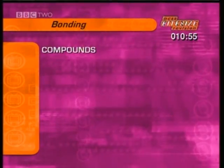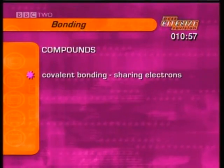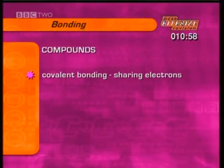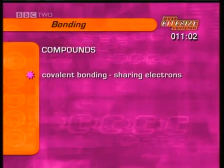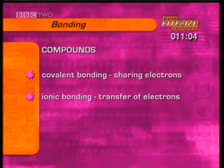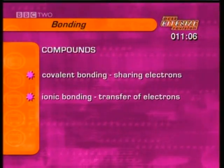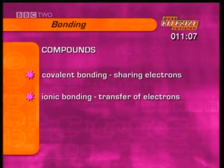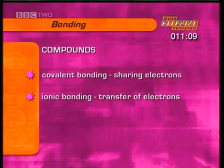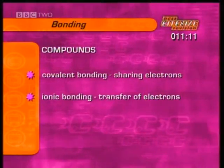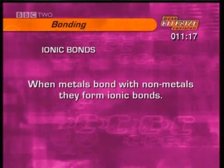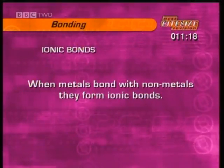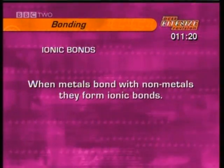We saw two types of chemical bonding there. Covalent bonding is when atoms share some of the same electrons in their outer shells. Ionic bonding is when electrons transfer from the outer shell of one atom to the outer shell of another. First, more about ionic bonding. When metals bond with non-metals, they form ionic bonds.